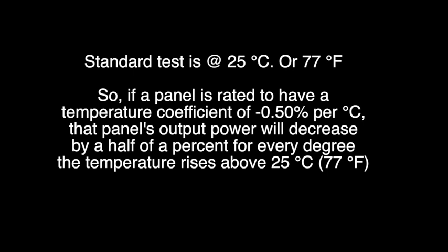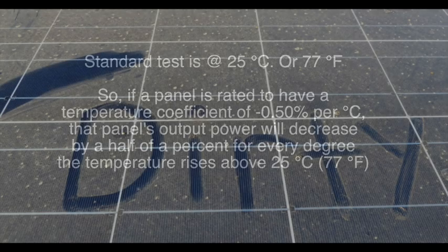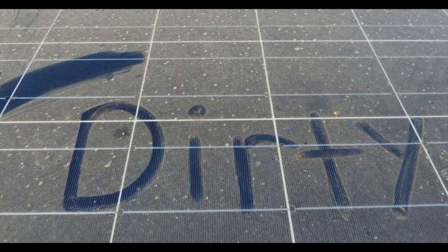The standard test for solar panels is conducted at 25 degrees Celsius or 77F. So if a panel is rated to have a temperature coefficient of minus 0.5% per degree Celsius, that panel's output will decrease by half of a percent for every degree the temperature rises over 25 or 77F. That's a lot. The cleanliness of your panel is paramount to its efficiency. I don't think I need to say any more about that.